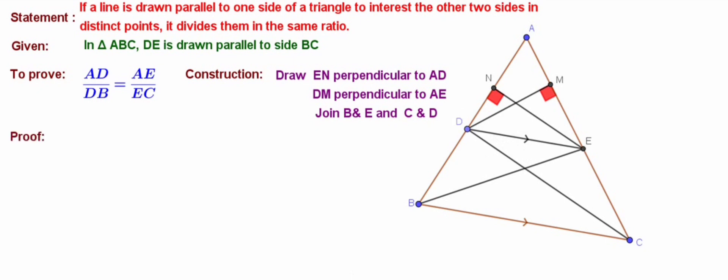Now we can take the areas of the triangles. Area of triangle ADE can be taken in two different ways. One with AD as the base and EN is the altitude, and AE as the base and DM as the altitude. Area ADE is equal to half AD into EN or it is half AE into DM.